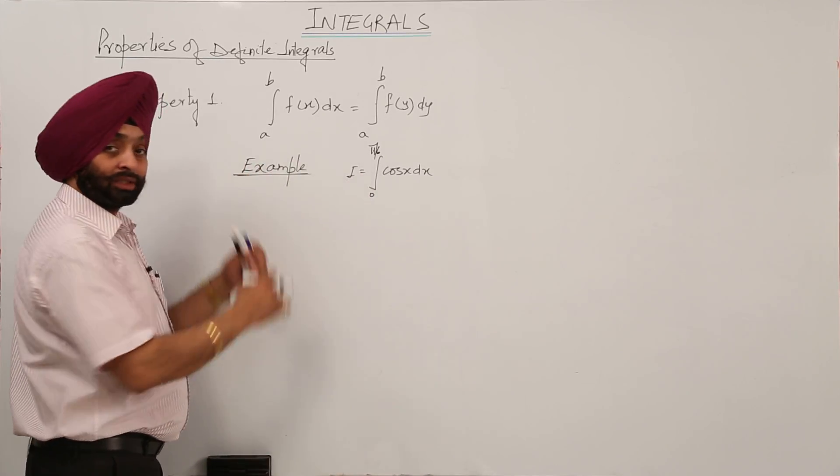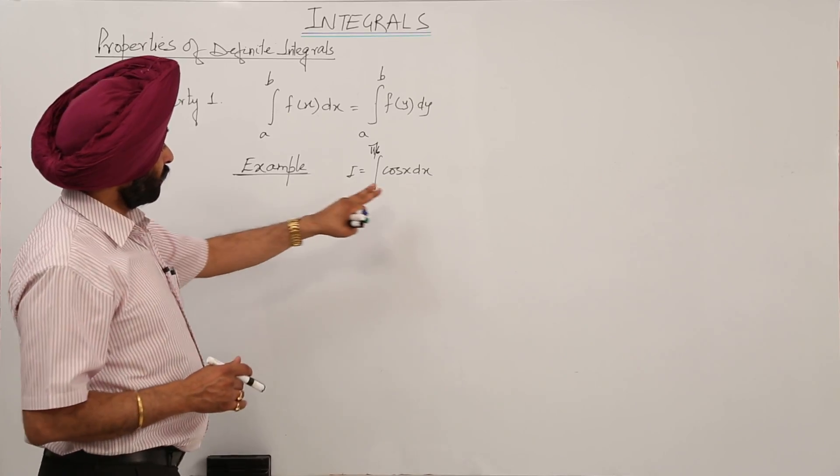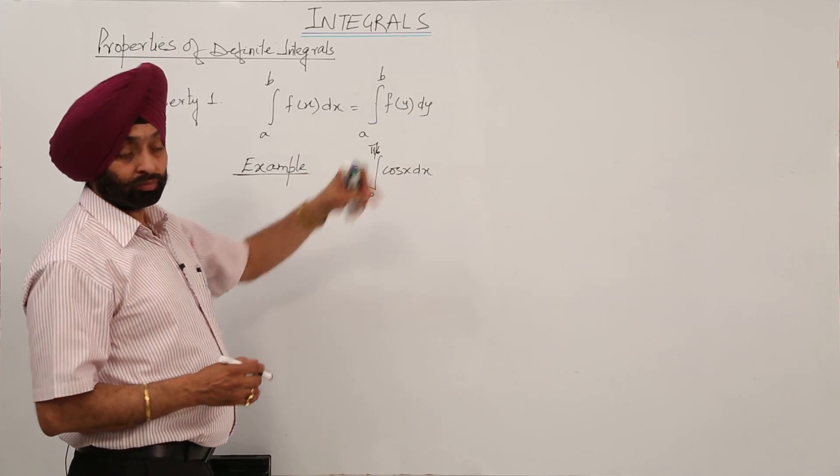Now suppose this is a question we are doing now. Property number 1. Now we have to write this question in both the forms.